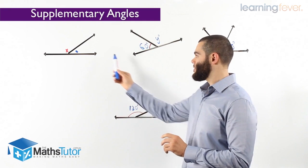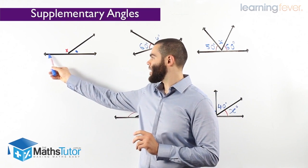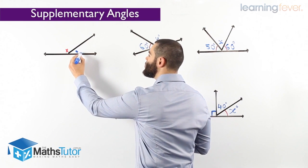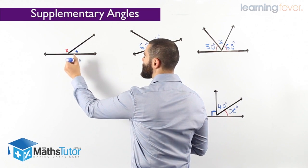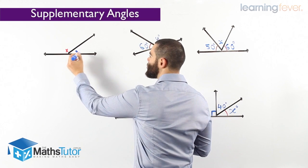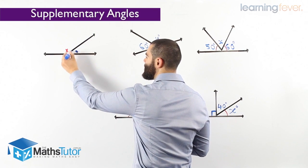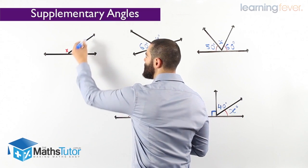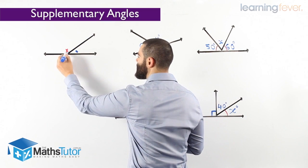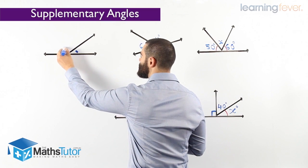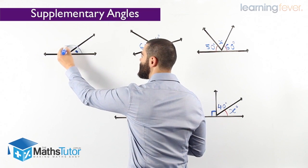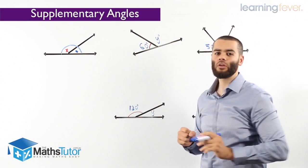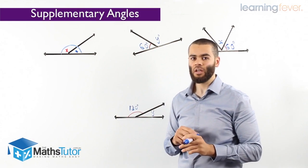In theory, we have a straight angle made up of 180 degrees, and it's split into two or maybe even more angles. In this case, split into two angles that share a common arm and a vertex. This angle marked in blue and this angle marked in red both add up to 180 degrees — they make a straight line. These are what we call adjacent supplementary angles.